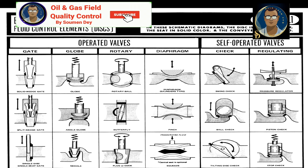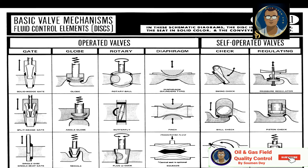Globe valves are also three types: globe, angle globe, and needle. Rotary types include rotary ball valve, butterfly valve, and plug or cock valve. Diaphragm type includes diaphragm Saunders type, pinch type, and squeeze type. In the category of self-operated valves, we have check valves — swing check, ball check, and tilting disc check — and regulating valves like pressure regulator, piston check, and stop check.